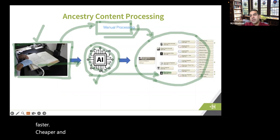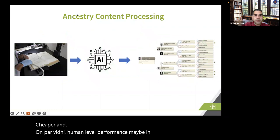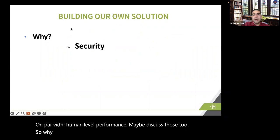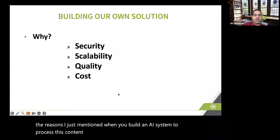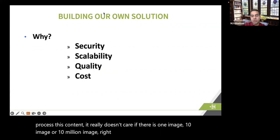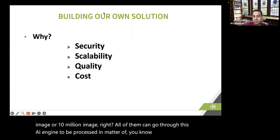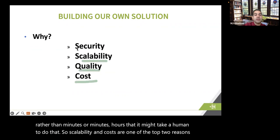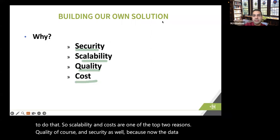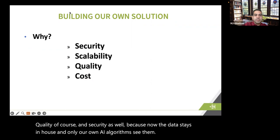This AI processing is usually faster, cheaper, and on par with human-level performance. Why are we building our own solution at Ancestry? When you build an AI system to process content, it doesn't care if there is one image, 10 images, or 10 million images. Processing an image might take a few milliseconds through AI rather than the minutes or hours it might take a human. So scalability and cost are the top two reasons, along with quality and security — because the data stays in-house and only our own AI algorithms see them.